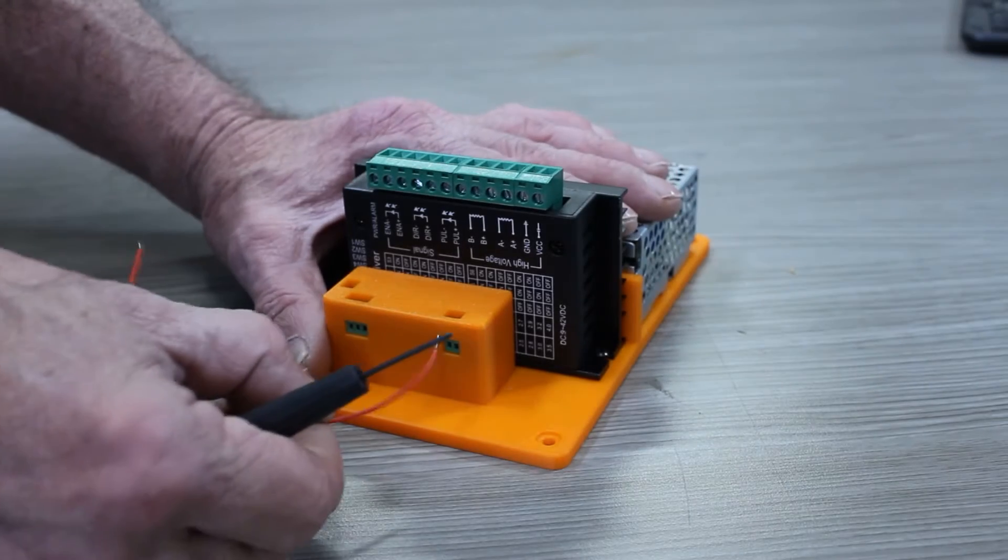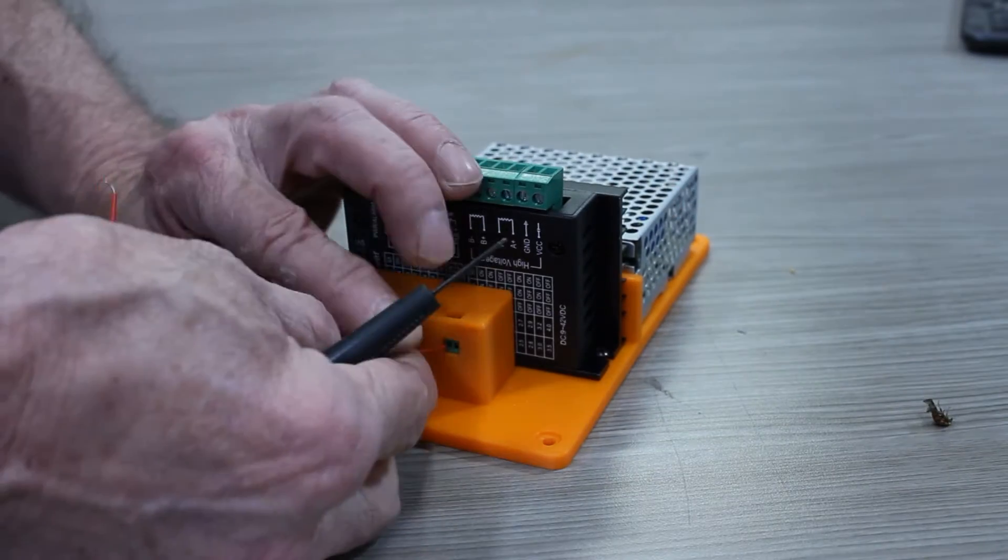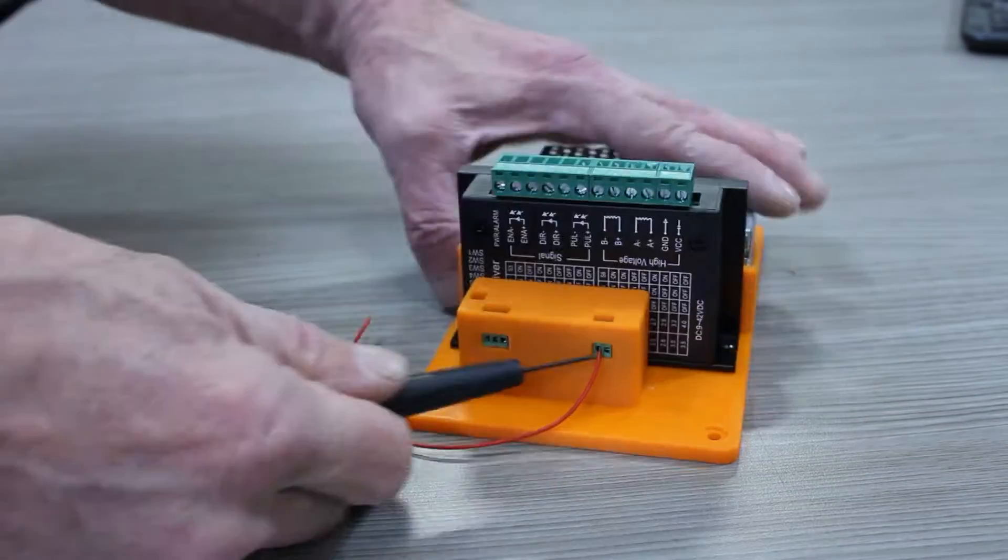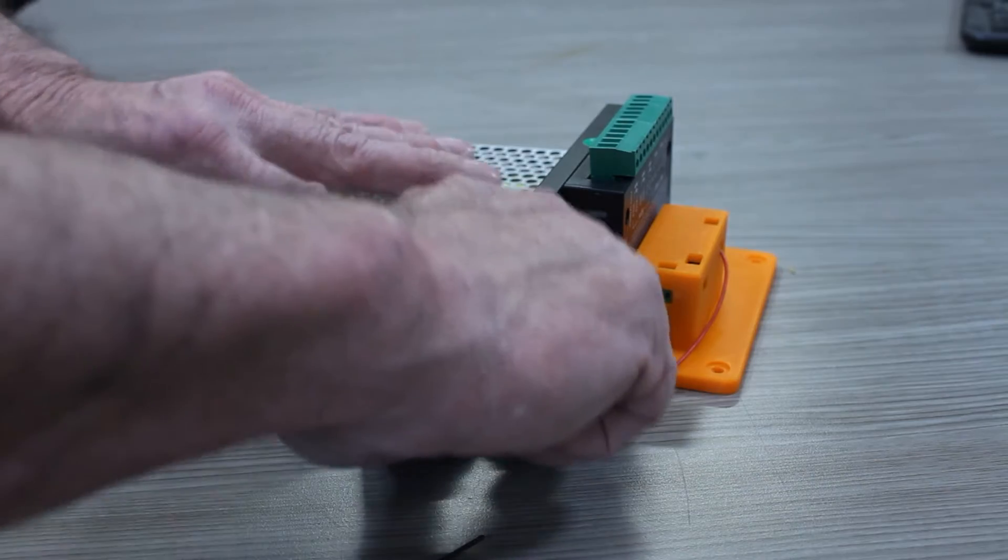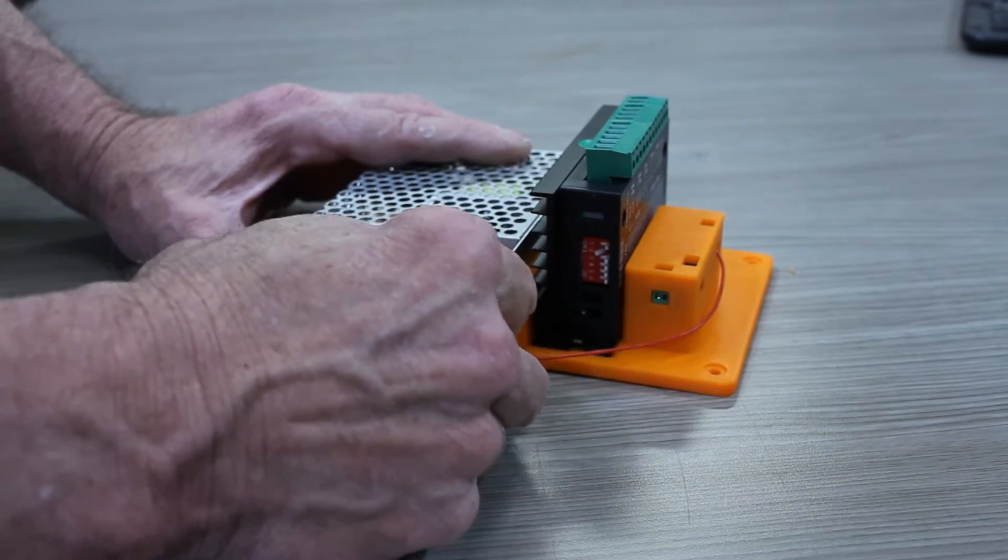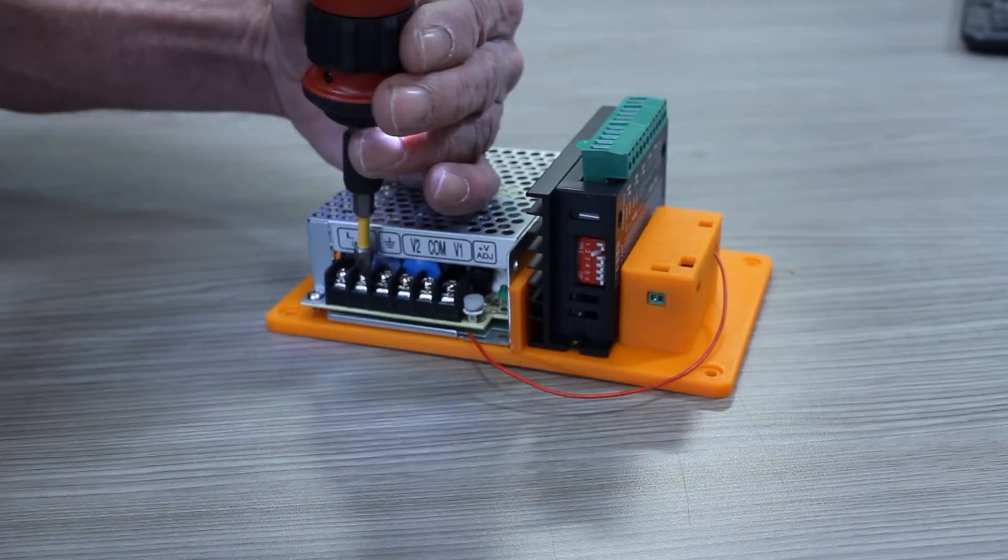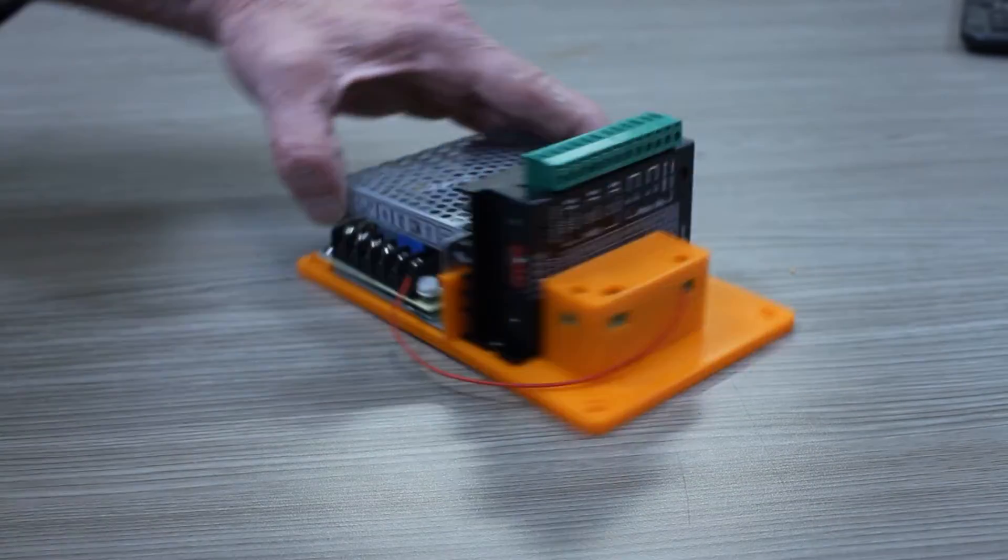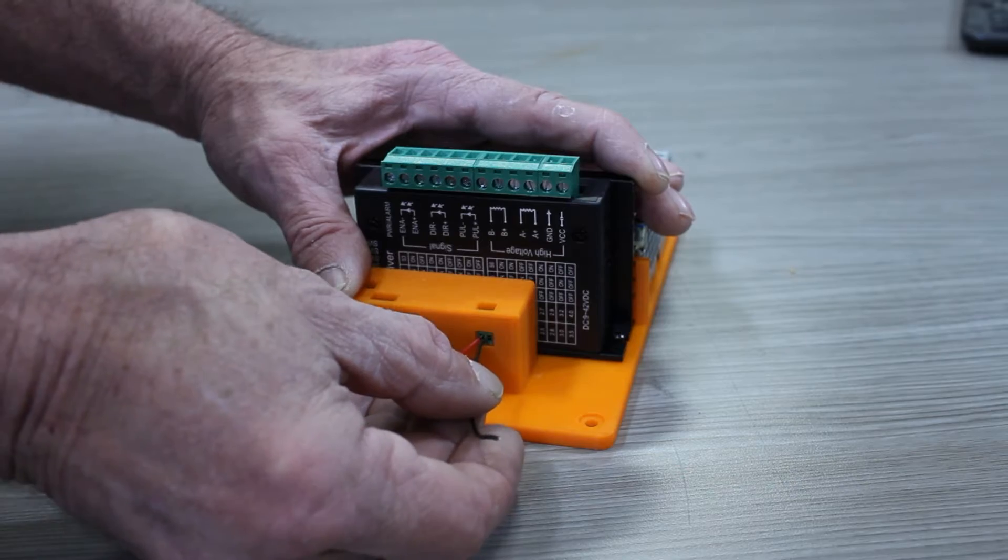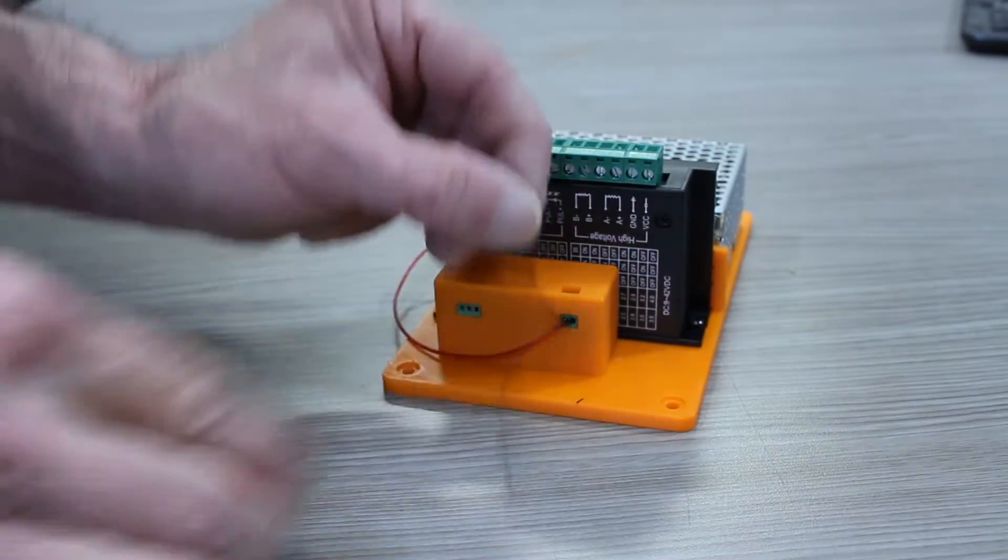So the best thing to do is to wire this little guy first. So this is five volts and we're going to come over and we're going to connect it into V1. We're not going to tighten it down yet. Now we're going to connect this ground wire.